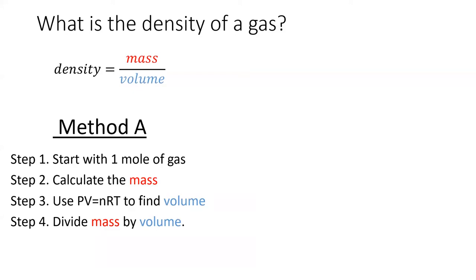Method A is the most straightforward and it's the method I prefer. First, I assume one mole of gas for simplicity. I can calculate the mass of one mole using the molar mass. Then I use the ideal gas law to calculate the volume of one mole of gas. Lastly, I divide the mass by the volume, and we've got density.